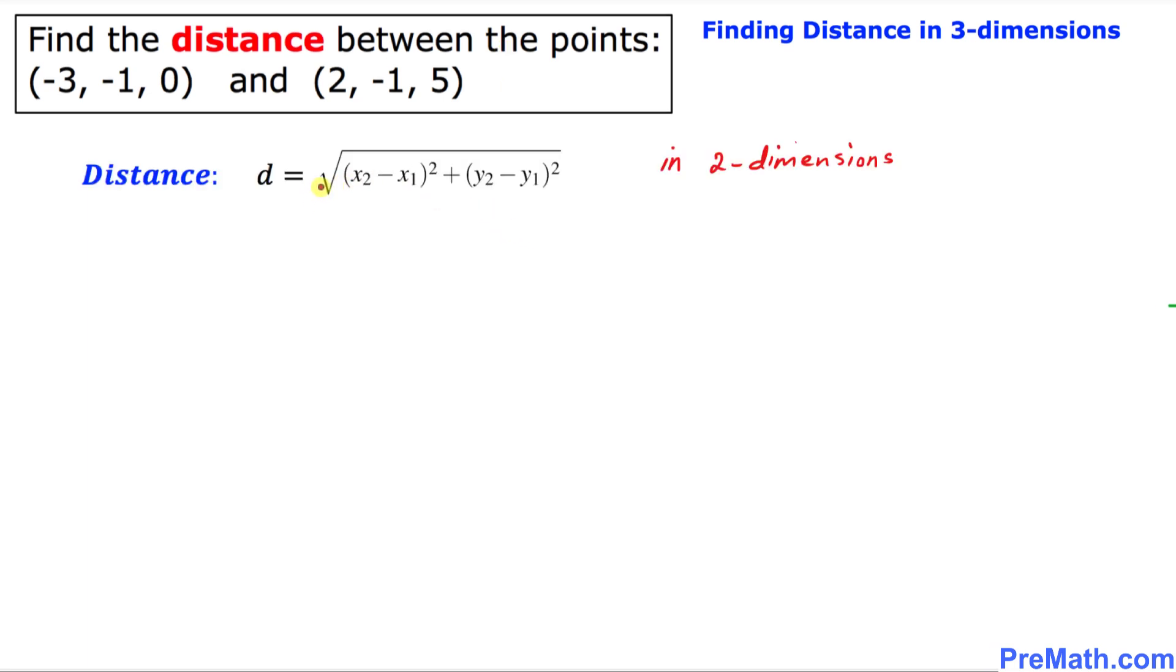Let's recall the distance formula in two dimensions. The distance over here has been given and we are familiar with this. The distance between two points in two dimensions is simply square root of (x₂ minus x₁) squared plus (y₂ minus y₁) squared.